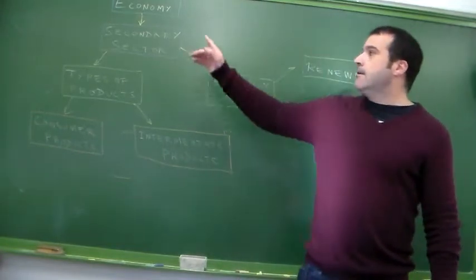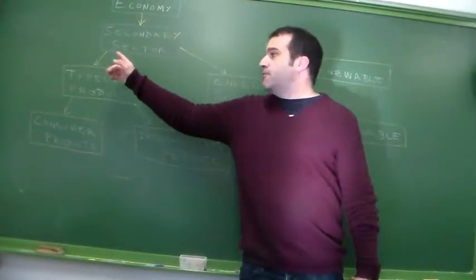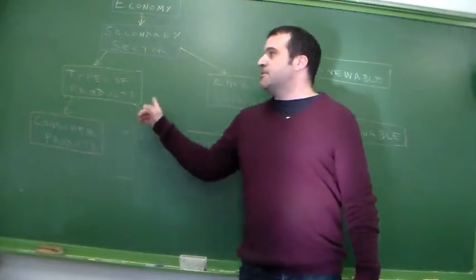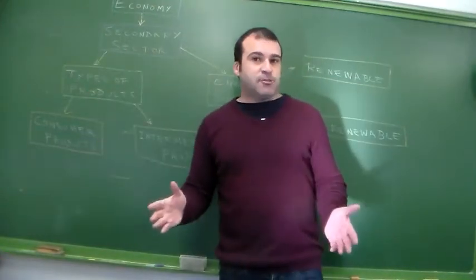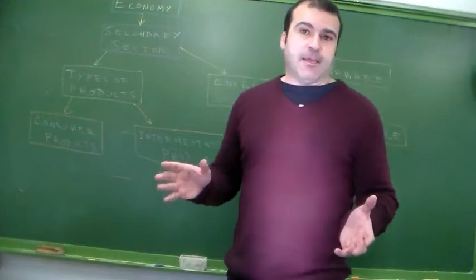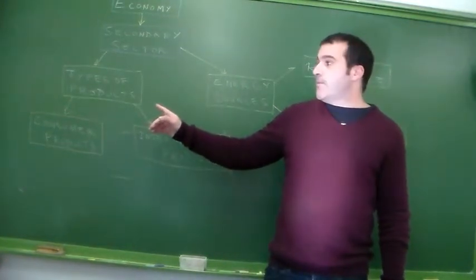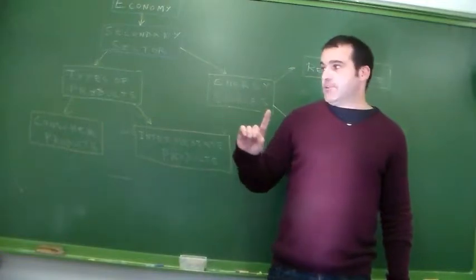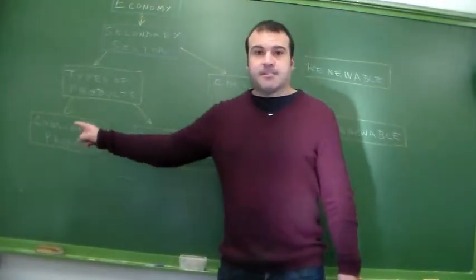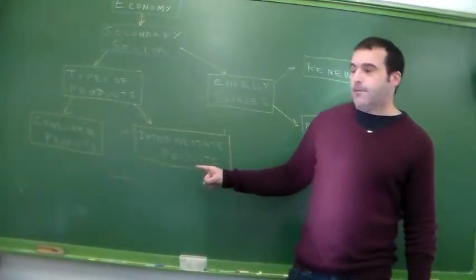Now, let's see the secondary sector. The first item that we find is types of products. The different industries depend on the type of product that they deal with. So regarding types of products, we basically find two types of products: consumer products and intermediate products.